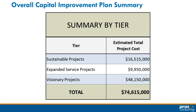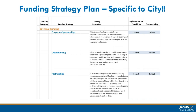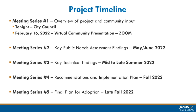Ultimately we create a cost estimating summary — it gives you an understanding going in of what that total cost estimating plan looks like. The key is the funding strategy specific to your city: what can you afford, and what funding strategies do you have to support each project so that we can create implementable and sustainable recommendations for you? Our overall project timeline: meeting series one wraps up with a virtual community meeting via Zoom on February 16th. Meeting series two is in May and June, covering public needs and park and facility assessments.